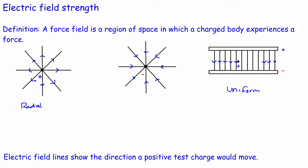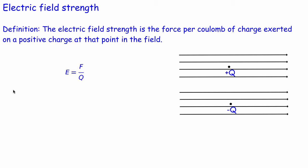Now we're going to define electric field strength. In the same way we did with gravity — where we wanted a quantity that doesn't depend on the size of the mass in the field — we do the same here. We want to compare electric fields without it depending on the size of the charge we place inside. So the definition of electric field strength is: the force per coulomb of charge exerted on a positive charge at that point.